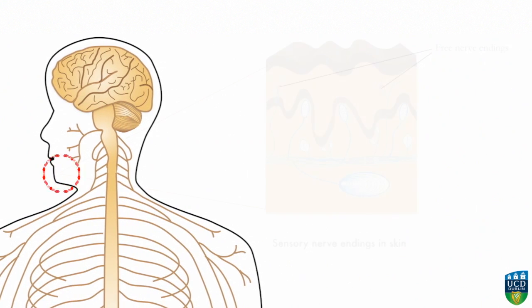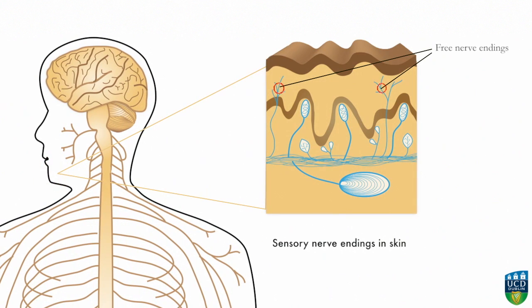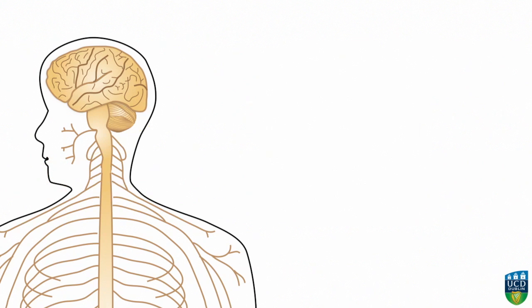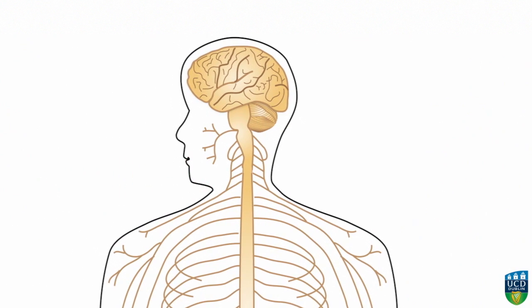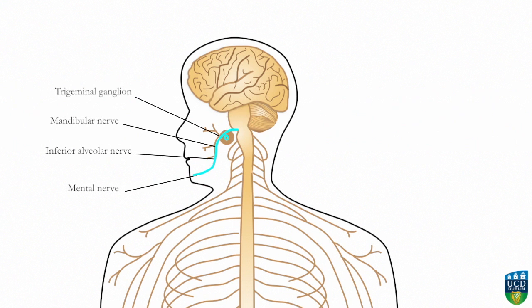The impulse begins in epidermal free nerve endings, which mediate thermal and pain sensations from the skin. In this case, the impulse travels via the first order neuron from the chin through branches of the mandibular nerve to reach the brainstem via the trigeminal nerve.